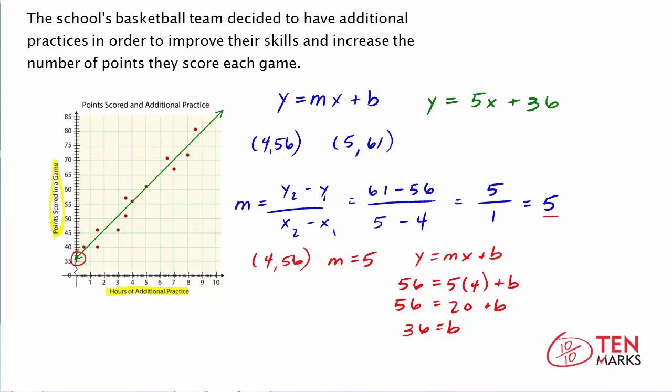Now you can put this line into context. So the slope tells you, the slope is the rate of change. So this tells you for every hour of practice, they score about 5 additional points. Now remember, that's because practice is on the x-axis, and points is on the y-axis.